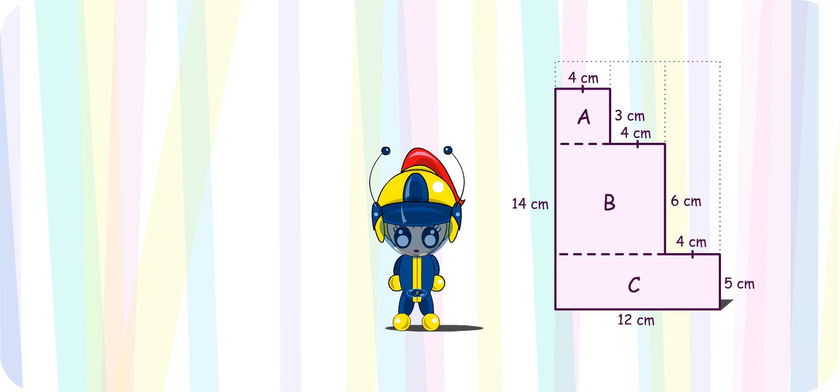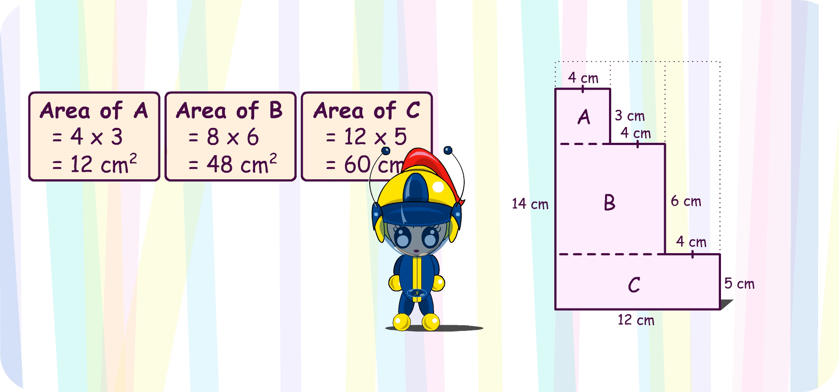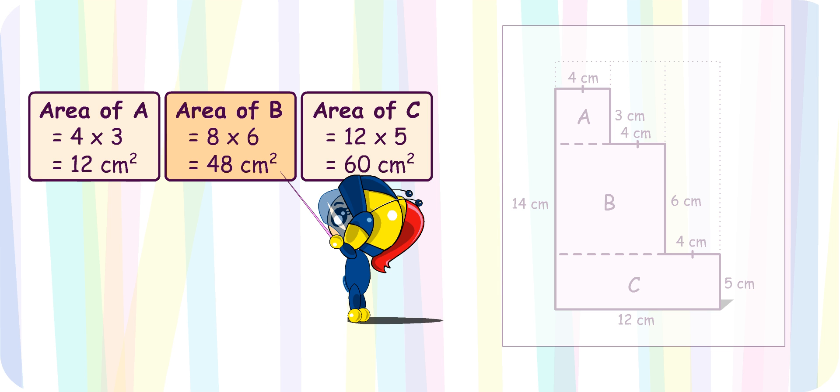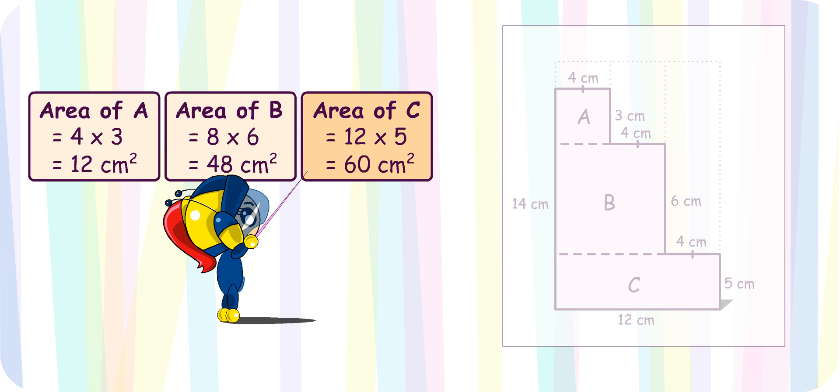Next, I can find the area of each of the three sections. The area of A is 4 times 3, which is 12 cm². The area of B is 8 times 6, which is 48 cm². The area of C is 12 times 5, which is 60 cm².